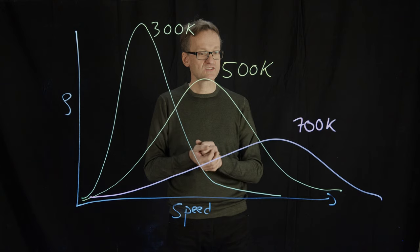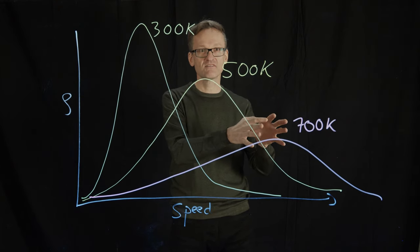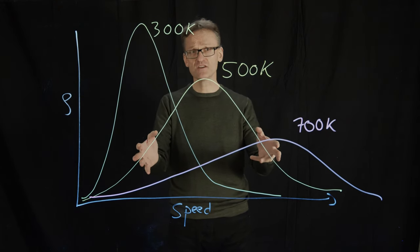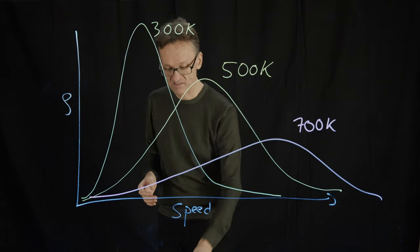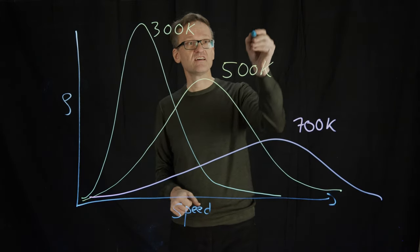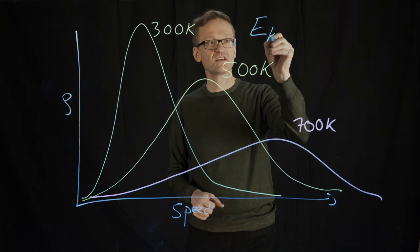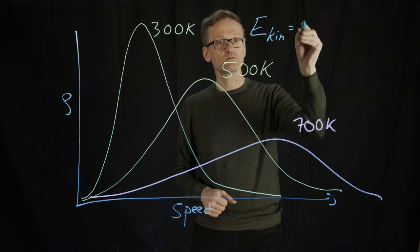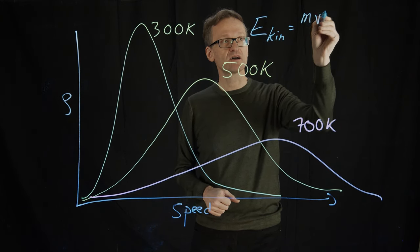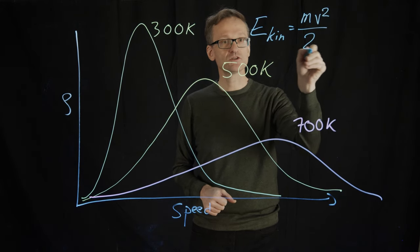Why do things on average move faster at 700 kelvin? Because here too it's a matter of energy. We know that the kinetic energy of a molecule, E_kin of a small particle, is equal to the mass of the particles multiplied by the velocity squared divided by two.